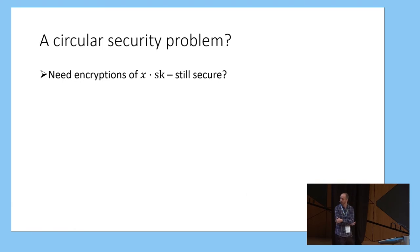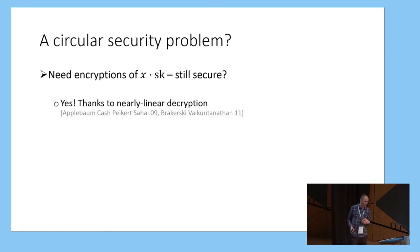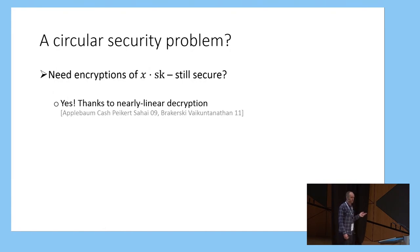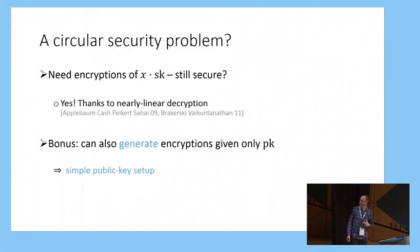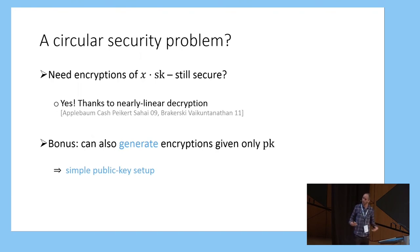You might notice a slight problem: we have to have encryptions of x times by the secret key for every input value x, which might give a circular security issue. Thankfully, in all these lattice-based encryption schemes there are results which show these schemes are naturally circularly secure for encrypting even linear functions of the secret key, essentially due to the linear property of the decryption equation. On top of this, we can exploit these proofs of circular security to give an efficient mechanism for generating these encryptions of x times the secret key, given only the public key and the input value x — so this can be done in a public key manner without any special kind of setup.